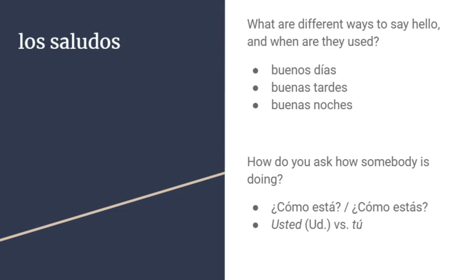These are three different ways to greet a person depending on the time of day. To ask how somebody is doing, you would say ¿cómo está? or ¿cómo estás? You should know the difference between usted — formal, singular you — and tú, which is familiar singular. Use tú with people you'd call by their first name or relatives. Use usted for people you'd address with their last name, like a teacher or a friend's parent. ¿Cómo está? is the usted form; ¿cómo estás? is the familiar form.